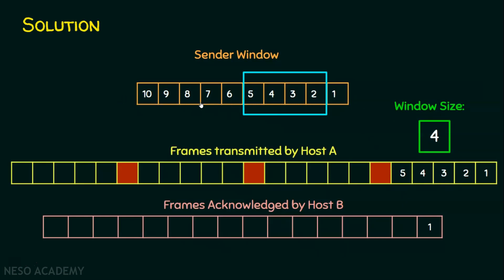After sending frame 5, the receiver acknowledges frame 2, so the sender takes the next available frame — frame 6 — and transmits it. This sixth transmitted frame is going to be lost, meaning the receiver will not acknowledge frame 6. After frame 6 is sent, the window slides. The next frame that should be acknowledged by the receiver is frame 3, so the sender transmits frame 7 and the window slides accordingly.